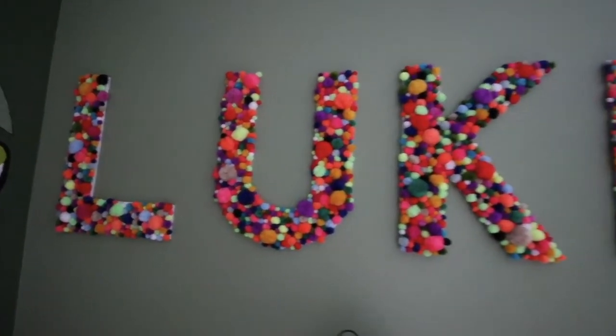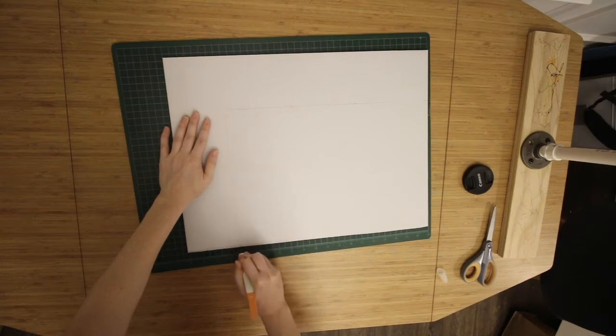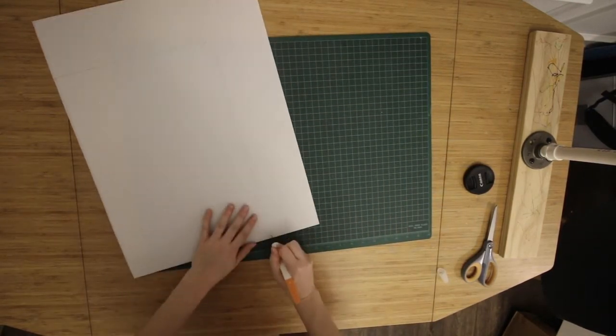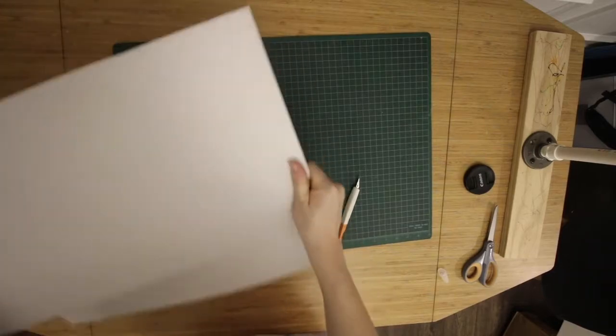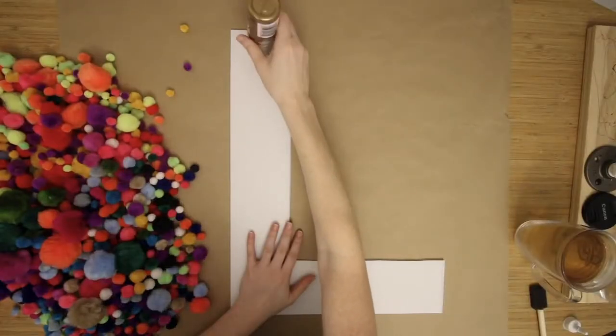Here's how to make oversized pom-pom letters to hang on your wall. First, start with foam core cardboard, or I actually used this plastic board from Michaels that also has a corrugated core. You can use an exacto knife to cut out your letters after tracing them with a pencil to make them even.